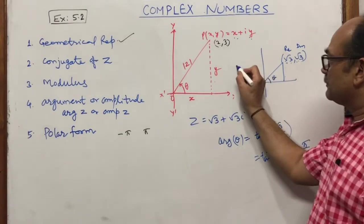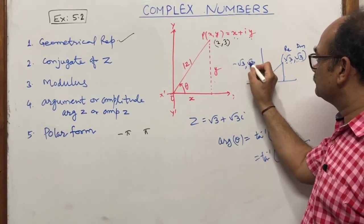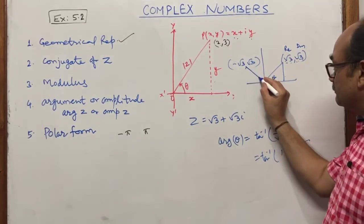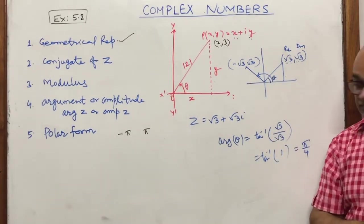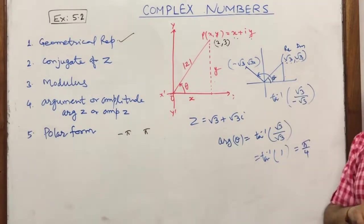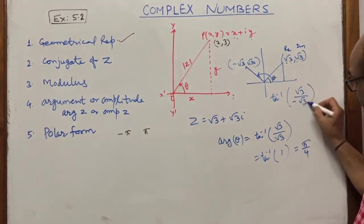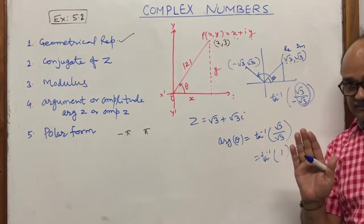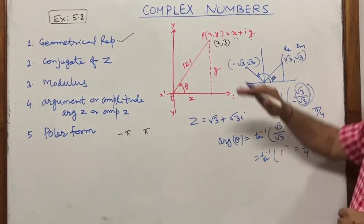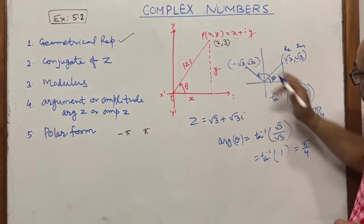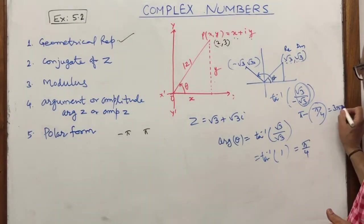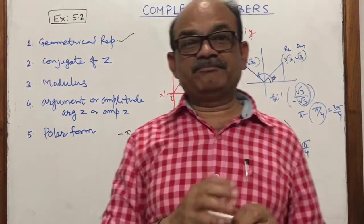Now if the same number is in quadrant 2 — real part is −√3 but imaginary part is √3 — we first take the absolute value: tan⁻¹(√3/√3) = tan⁻¹(1), giving π/4. But since it is in quadrant 2, we write θ = π − π/4 = 3π/4. So the argument is 3π/4.